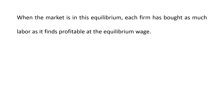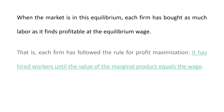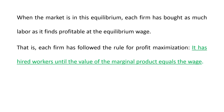When the market is in this equilibrium, each firm has bought as much labor as it finds profitable at the equilibrium wage. That is, each firm has followed the rule for profit maximization — it has hired workers until the value of marginal product equals the wage. So the profit maximization condition is: the value of marginal product of labor is equal to the wage rate.